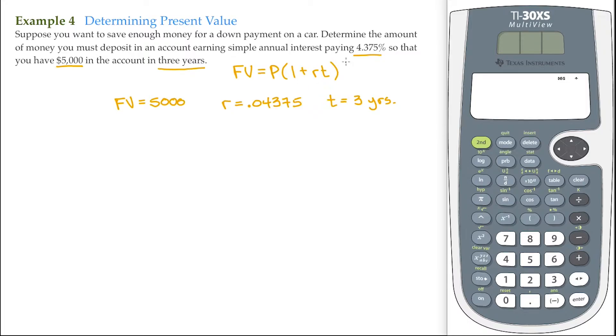So now using our future value formula, I have $5,000. That's going to be equal to the present value, that's what we're looking for, times 1, plus the rate, that's 0.04375, times the number of years, that's 3.